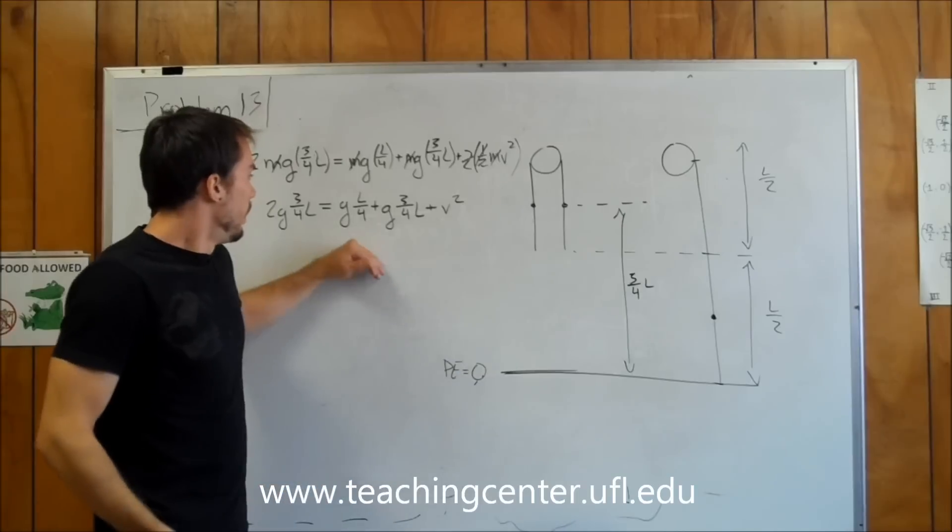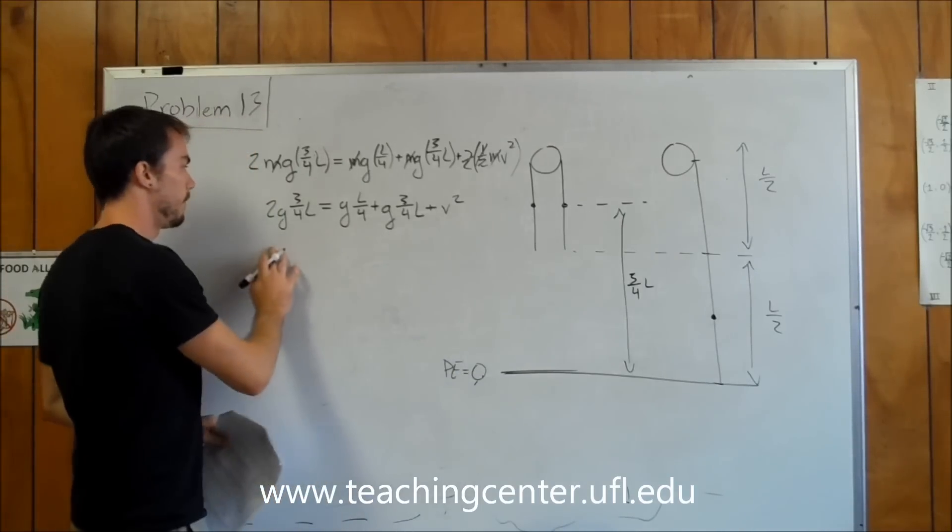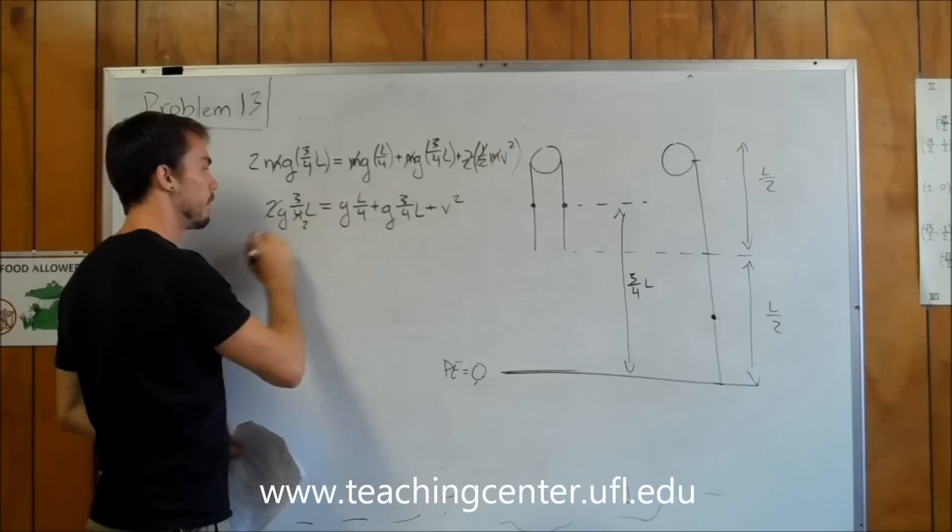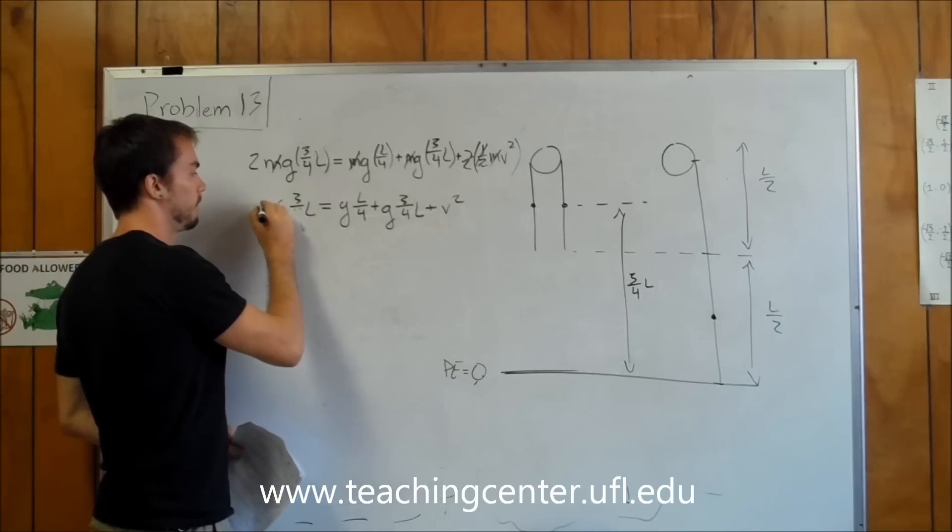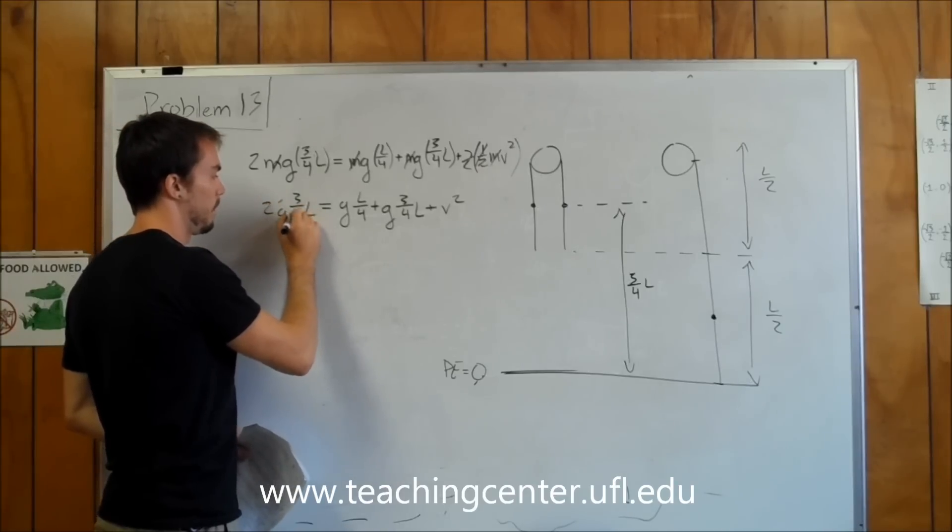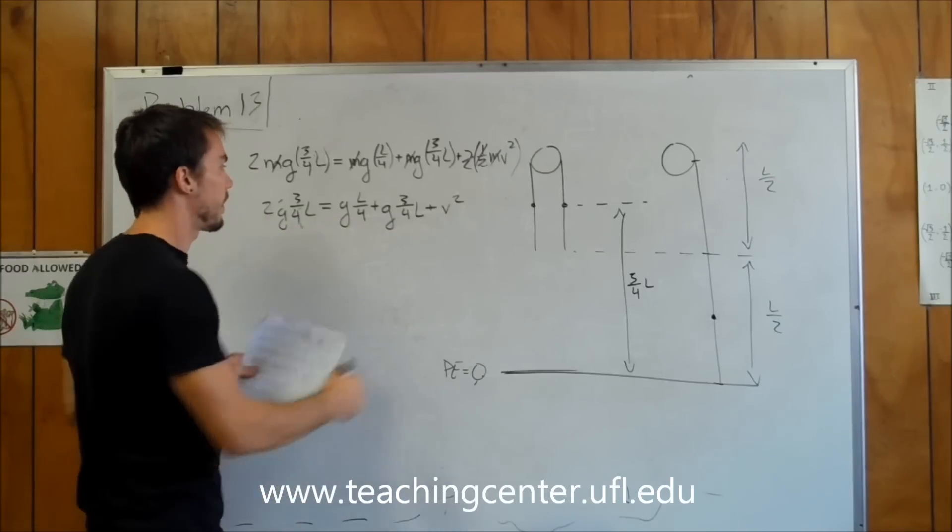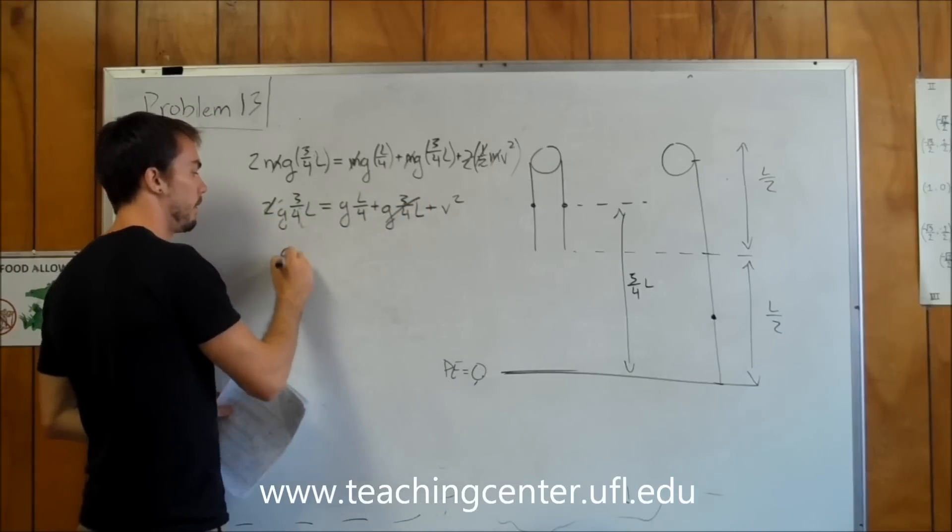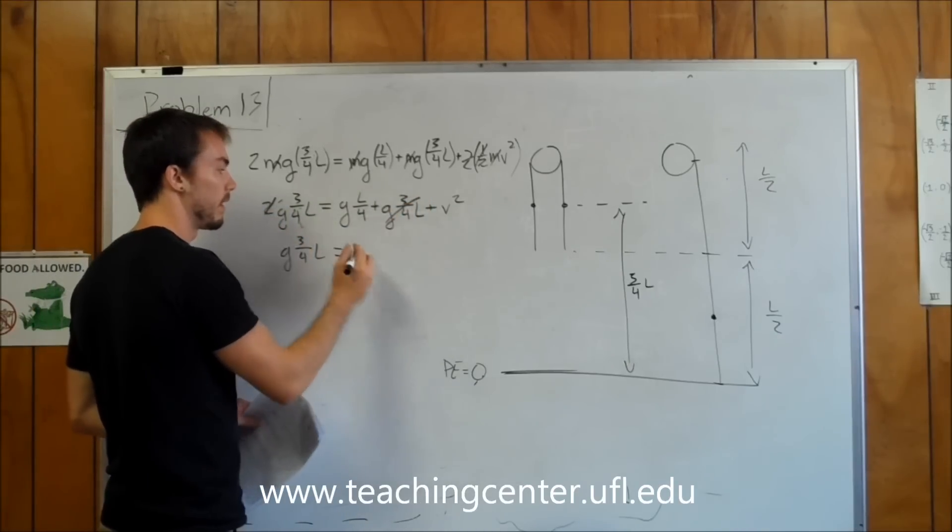So at this point in time, just more algebra. I'm going to say we have g 3/4 of L, and then we have 2g 3/4 of L. So we can cancel this out and cancel it in 2, and just leave this with 1 on this side by subtracting this one over here.